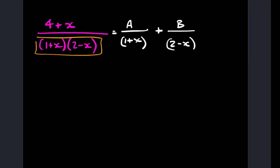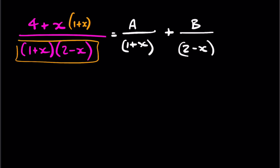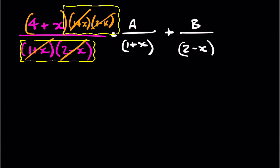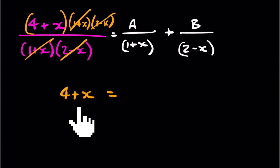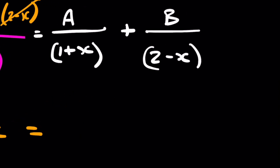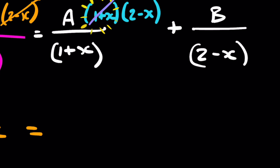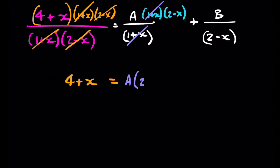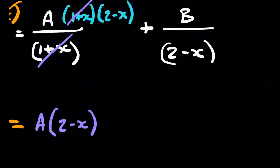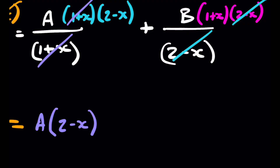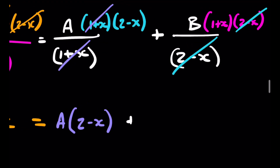What we'll do is multiply both sides of the equation by the full denominator. When we multiply the left-hand side, the denominator cancels out, leaving us just with 4+x. On the right-hand side, when we multiply A by (1+x)(2−x), the (1+x) will cancel with the denominator of A, leaving A(2−x). Similarly for B, the (2−x) cancels, leaving B(1+x).